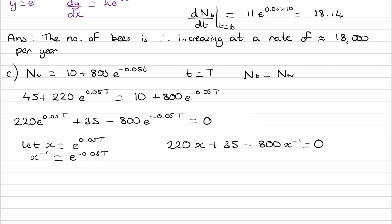So if you didn't get to this stage, try solving this equation now. Times both sides by x, so it becomes 220x squared plus 35x minus 800 equals 0. And here's our quadratic.